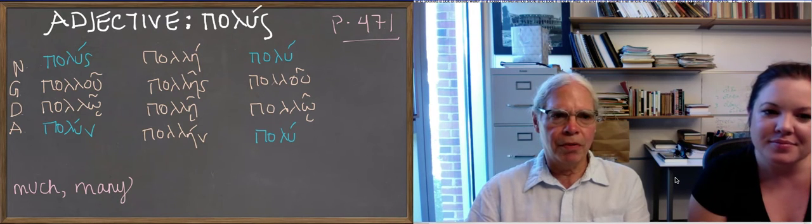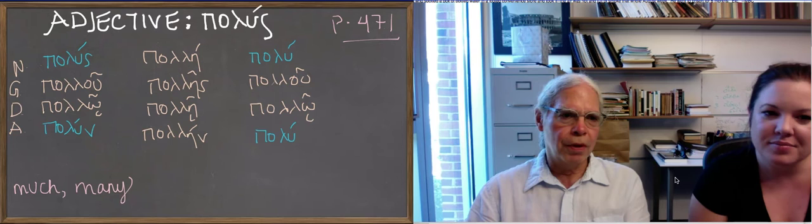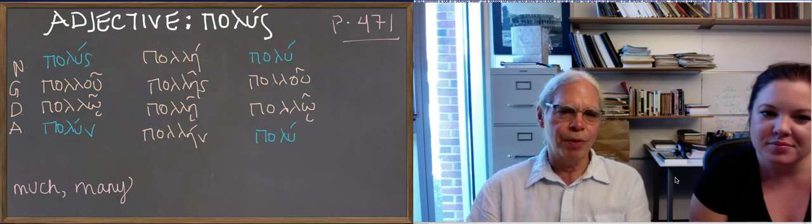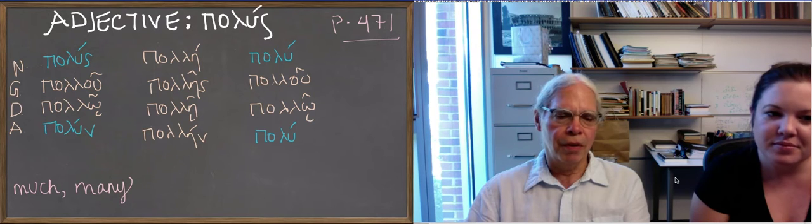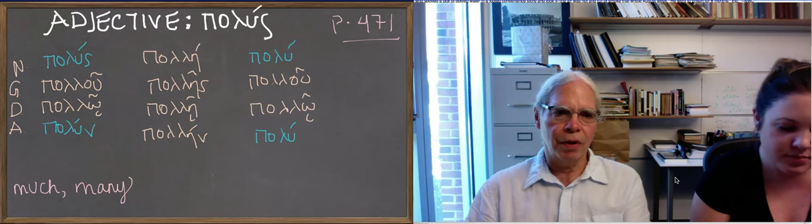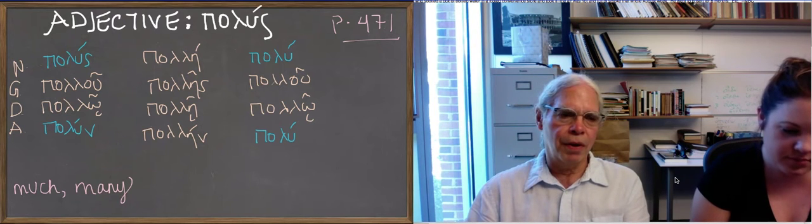Okay, what's happening is that this adjective πολύς, except for the four forms that are in blue and turquoise, beautiful turquoise blue that beliefs are used, it's just like ἀγαθός. Okay, the forms that are in yellow have a circumflex on the genitive and the dative and acute on the nominative or the accusative that are just like ἀγαθός.